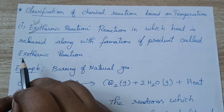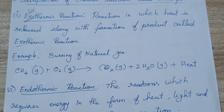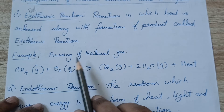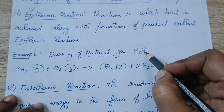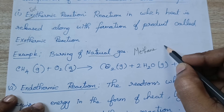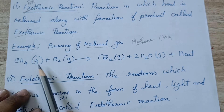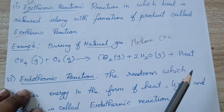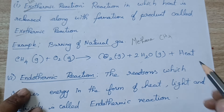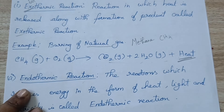Remember: exo means exit, it is coming out — heat comes out along with the product. Example: burning of natural gas. Natural gas is nothing but methane, chemical formula CH4. When methane reacts with oxygen, it gives CO2 plus H2O plus heat. Since heat is produced along with the product, it is called an exothermic reaction.